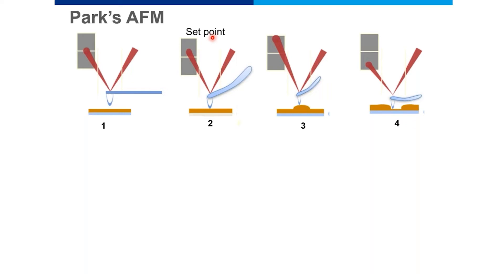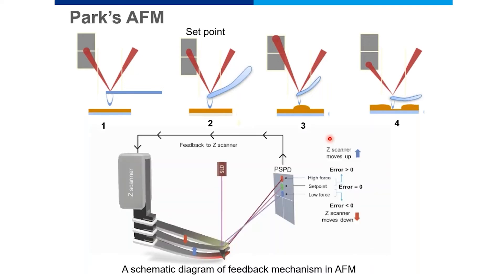If the sample has a hill-like structure, the tip bends even further as it goes over that hill, and the laser spot moves even further down. Similarly, if there is a valley-like structure in the sample, the laser spot may move toward the bottom of the photodetector. The question is: how do we really generate the image from this? The answer lies in the feedback mechanism of the atomic force microscope.